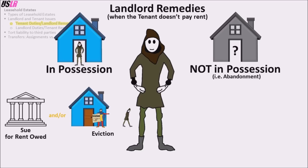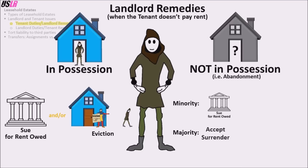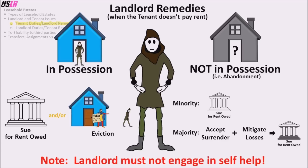If the tenant does not pay rent and is not in possession, a minority of states allow the landlord to sue for rent owed without doing anything else. However, the majority rule is that the landlord can treat the tenant's abandonment as an offer to surrender the leasehold, and if the landlord diligently attempts to mitigate his losses by making a good faith effort to find a replacement tenant, then the landlord can sue for rent owed. Note that the landlord must not engage in self-help, i.e., the landlord must not change the locks or forcibly remove the tenant or the tenant's possessions. Self-help is punishable civilly and criminally.